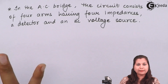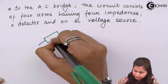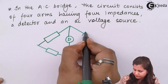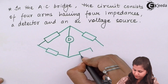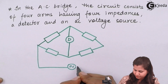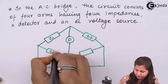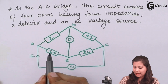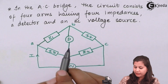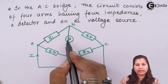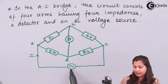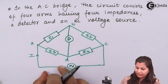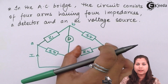So if we draw our basic AC bridge network, it will have four arms with four impedances: Z1, Z2, Z3, and Z4. In place of the galvanometer, between arms B and D, we have the detector. And between arms A and C, we have the AC voltage source — represented by the symbol for alternating current. So here we have an AC voltage source providing the power supply to the bridge network.